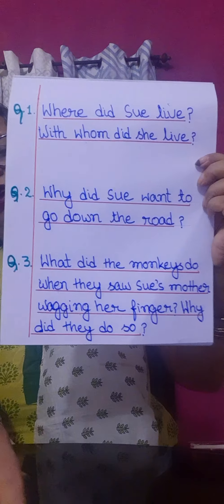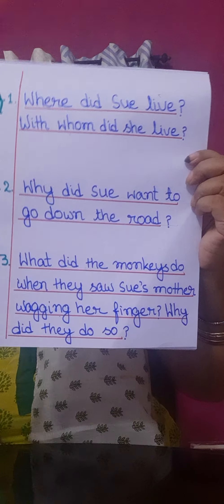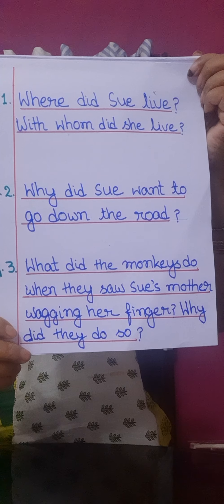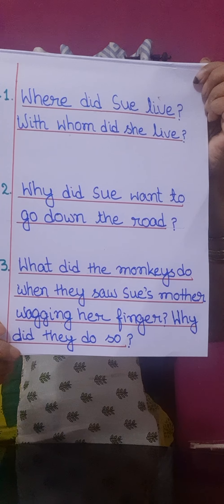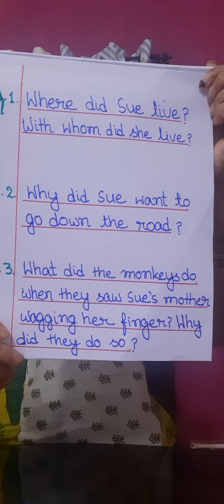Now I will discuss question answers. The first question is: where did Sue live and with whom did she live? Sue lived in the hot green island of Jamaica. She lived with her mother. You have to write the answer of the next part of the question from the next paragraph.